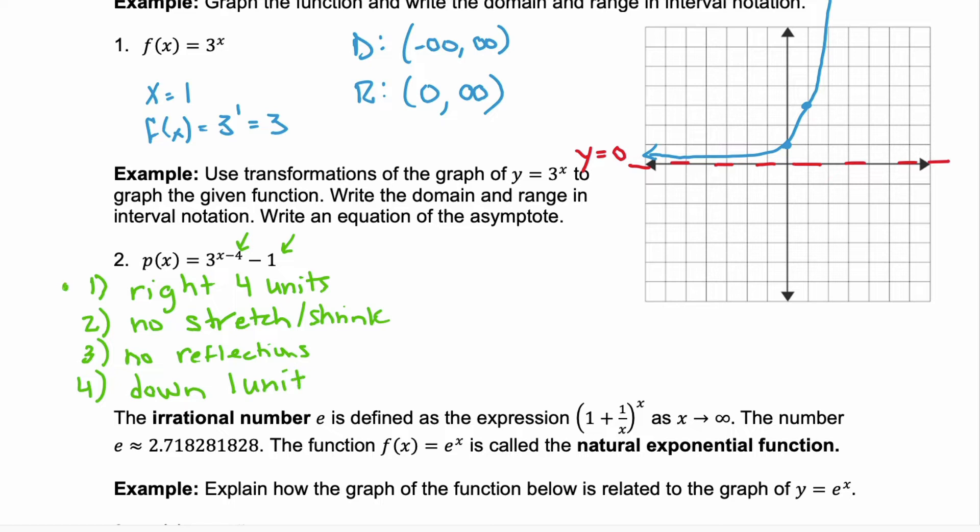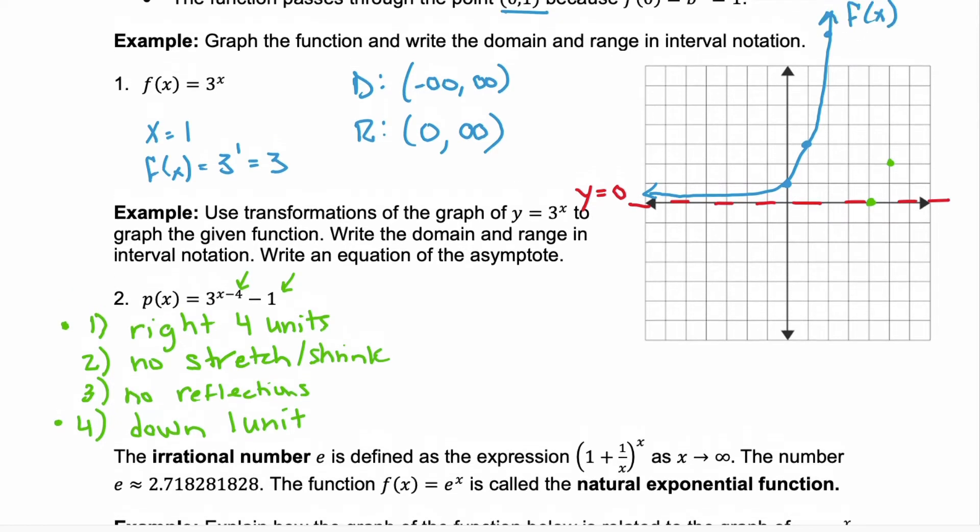So we just have two transformations: right 4 units and down 1 unit. So let's take those three points that we graphed and let's transform them. So our very first one, (0,1), we need to go right 4 units and down a unit. Go to the next point. Go right 4 units and down a unit. And then that value way up here, we can do the same.